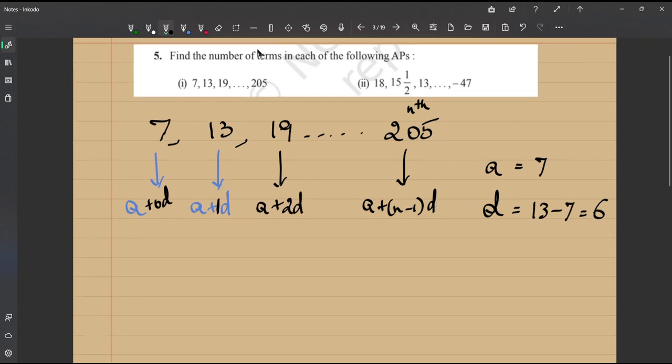So now let us substitute whatever we know. We know that A plus n minus 1 into D is equal to 205 and we have been asked to find the number of terms which is n, right? We know the difference is 6, we do not know n minus 1 and we know what is A, it is 7. So all of this is equal to 205 which is also been given to us as the last term.